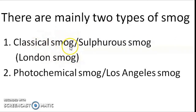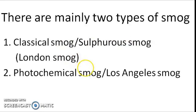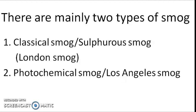London smog is also called classical smog, sulphurous smog, or reducing smog. It is called sulphurous smog because it contains higher levels of oxides of sulphur, and reducing smog because the sulphur dioxide present in it is reducing in nature. It is called London smog because it was first observed in London in 1952. Similarly, photochemical smog is named so because its components are formed via photochemical reactions. It is called Los Angeles smog because it was first observed there, and also called oxidizing smog because the oxides of nitrogen and ozone present in it are oxidizing in nature.